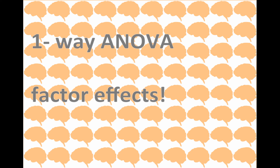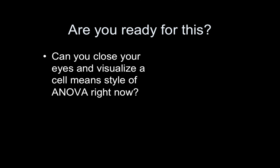Hi, this is the one-way ANOVA lecture, the second one. Last time we talked about a setup referred to as the cell means approach, and today we are going to talk about a different way of setting up a one-way ANOVA model using the GLM. It is called the factor effects approach.